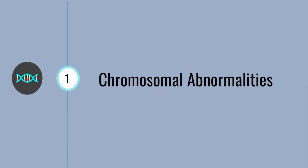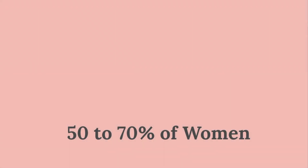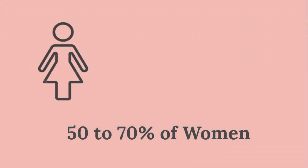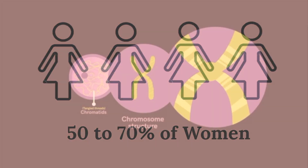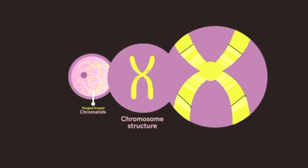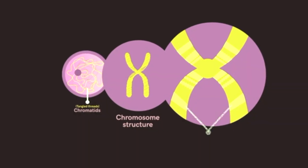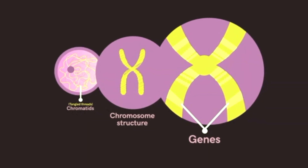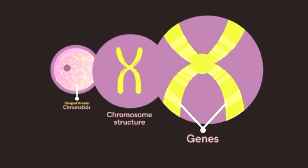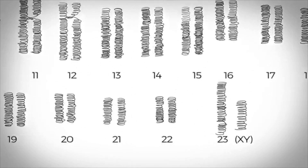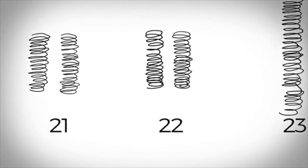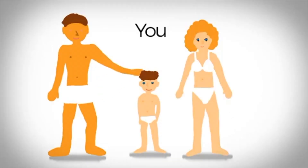Did you know the most common causes of miscarriages are chromosomal abnormalities? You must be wondering what chromosomal abnormalities are and why 50 to 70 percent of women experience them. Chromosomes contain genetic information in the form of genes. Different chromosomes have different genes, which makes us unique from one another. We all have 46 chromosomes — the fetus gets 23 from its mother and 23 from its father.